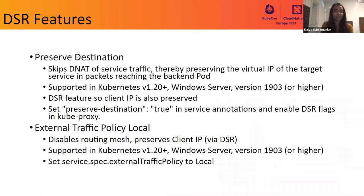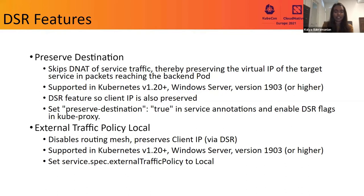We also have additional DSR features such as preserve destination, which skips DNAT of the service traffic so the virtual IP or service IP is still preserved instead of being written with the backend pod IP. This is supported in Kubernetes 1.20 with Windows Server version 19.03 or higher, and it also preserves the client IP. To use this feature, set preserve destination true in the service annotations and enable the appropriate DSR flags in Kube Proxy. We've also configured external traffic policy local, which disables the routing mesh so traffic remains local to that particular node. This also preserves client IP via DSR and is supported in Kubernetes 1.20 with Windows Server version 19.03 or higher — set service spec external traffic policy to local.